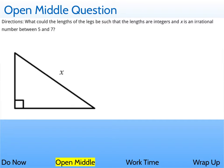It's basically saying, what are the lengths of the legs, these two sides, such that the lengths are integers, so these have to be whole numbers, and x right here is an irrational number between 5 and 7.